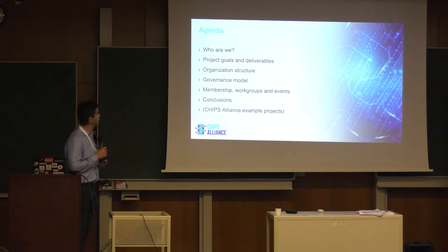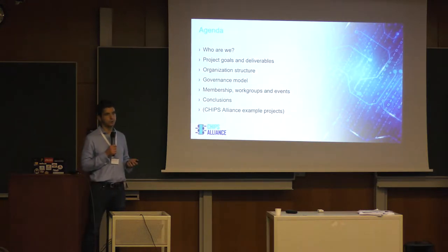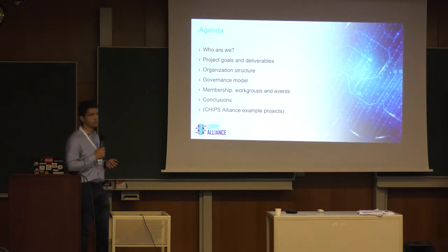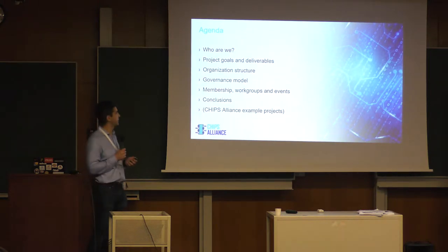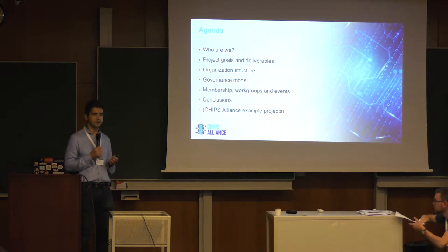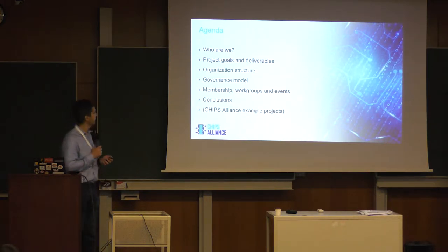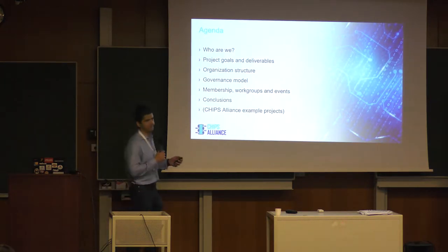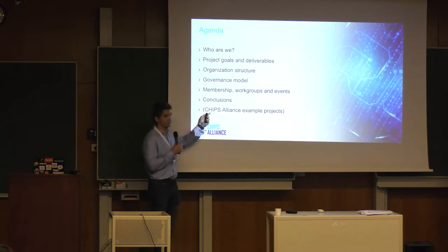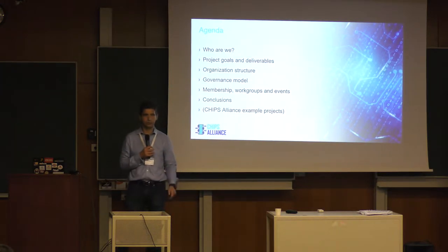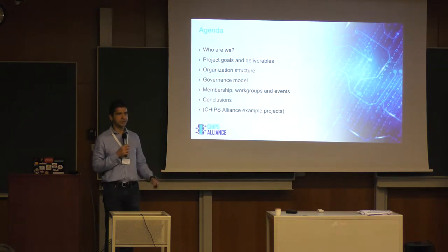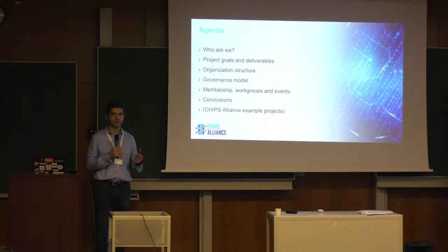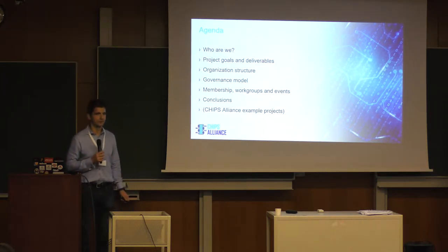For the CHIPS Alliance talk, the agenda is roughly: who we are, what is CHIPS Alliance, where did it start from, what are the project goals and deliverables, what's the organizational structure, who are the people, how it's being run, what's the governance model, what are the current work groups, current events and conferences, and then CHIPS Alliance example projects — five or six current projects — just a subset since not all had good PowerPoints developed.